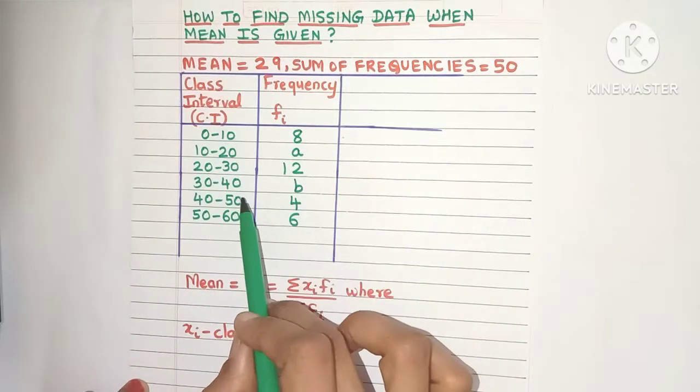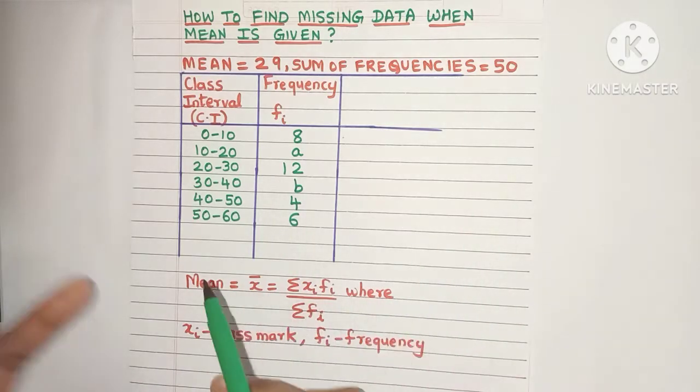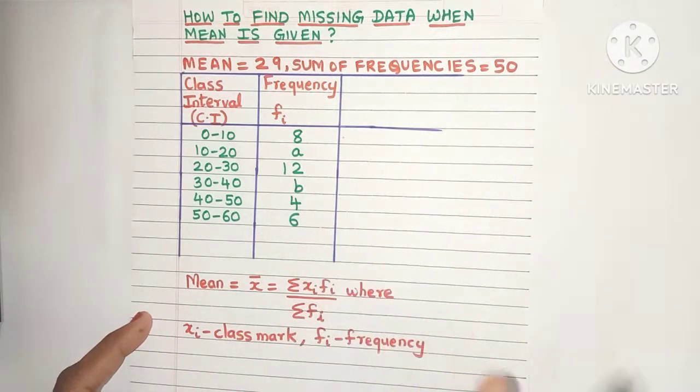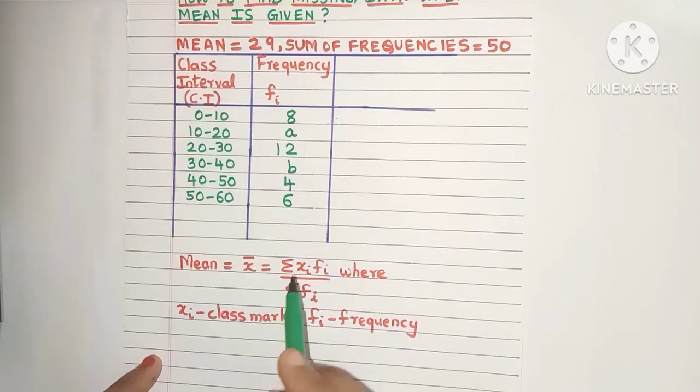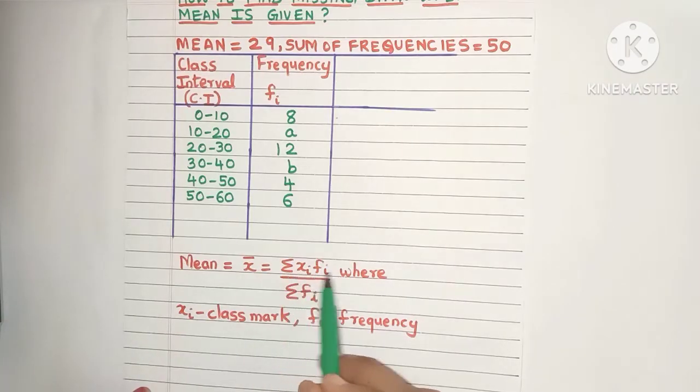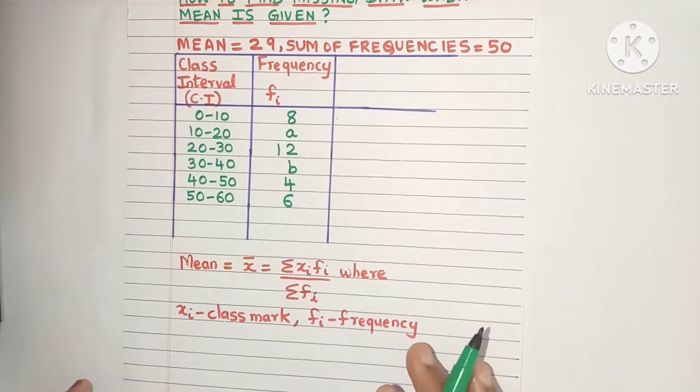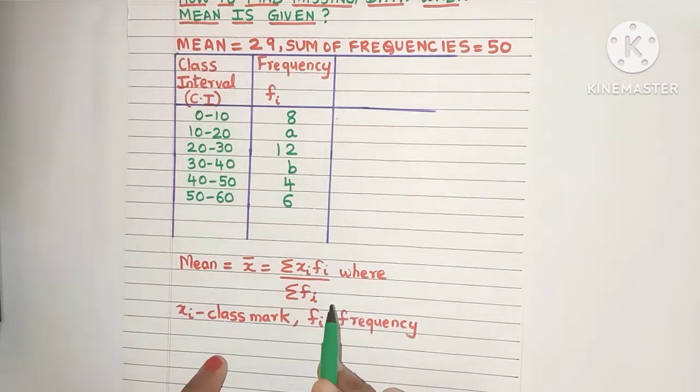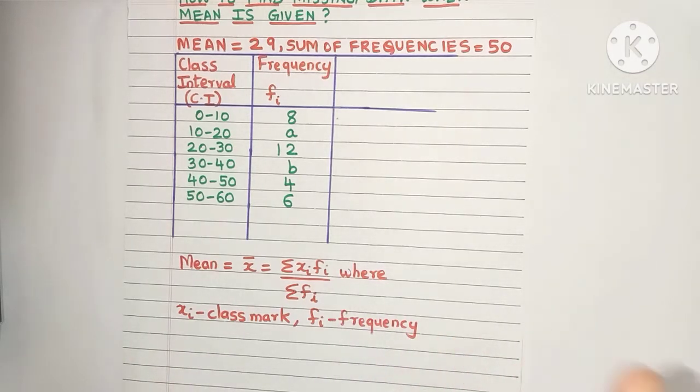Because the mean of the data is given, we will be using the mean formula to find the values of A and B. Here is the mean formula: sigma xi fi divided by sigma fi. But in order to use this formula, we need to find a few columns.